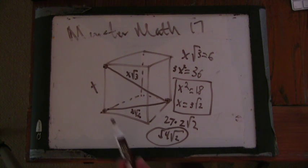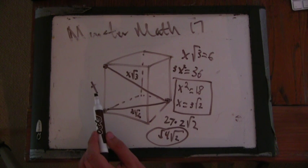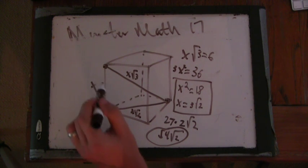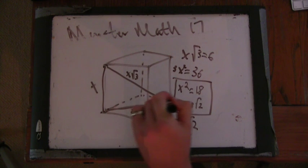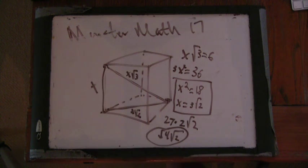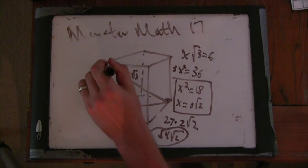But you also notice a fun little pattern here. In a cube you've got a triangle that's x, x root 2, x root 3. Right? In a hypercube, you'd have 2x? Yeah. For the hyperspace diagonal? For the longest diagonal, you have 2x. This x root 3 could still be around.